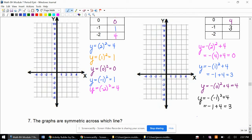And then we're going to plug in negative 2. Negative 2 squared, square of the input is positive 4. This negative comes down. Plus 4 is 0.